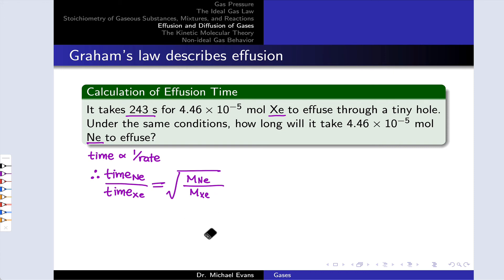We can plug in those molar masses of neon and xenon from the periodic table, and we get a relative time of effusion of 0.392. So it takes about 39% of this 243 seconds for the neon to effuse is one way to think about this.